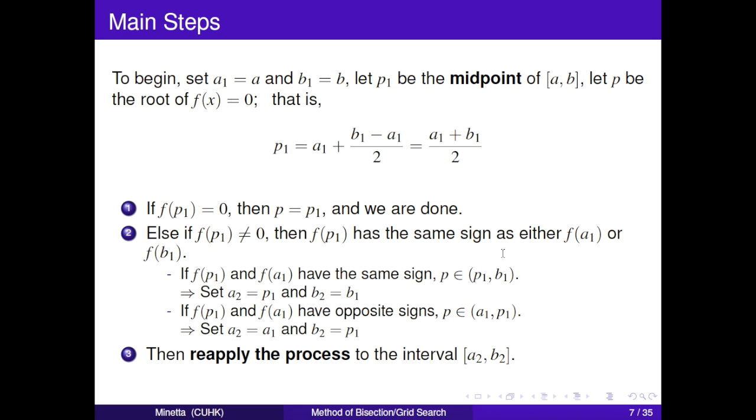Here are the main steps. To begin, set a1 equals a and b1 equals b. Let p1 be the midpoint of interval [a, b] and p be the root of f(x) equals zero. That is, p1 equals (a1 + b1)/2. Then we check the function value of p1. If f(p1) equals zero, then we get what we want.